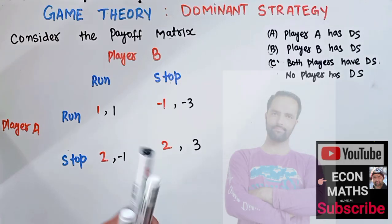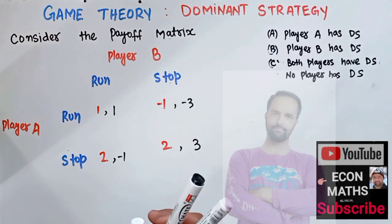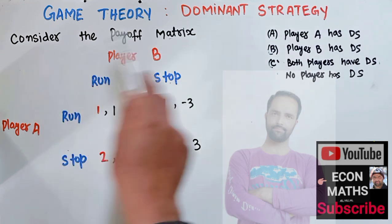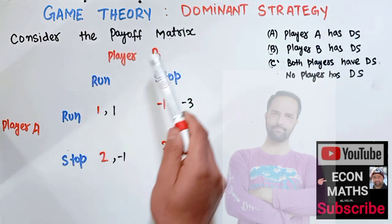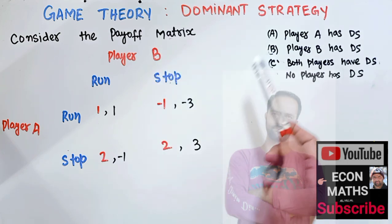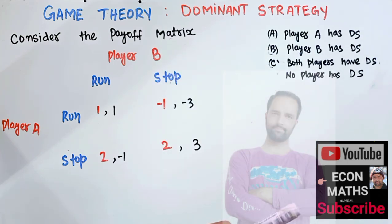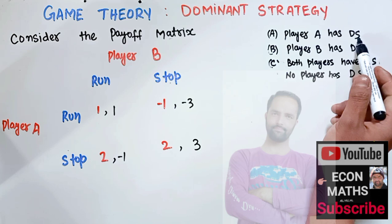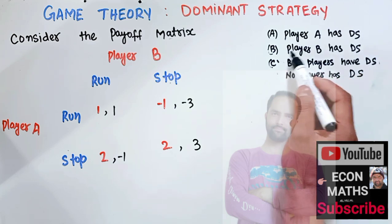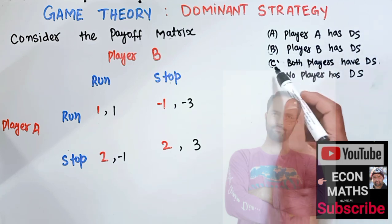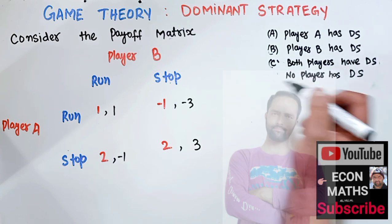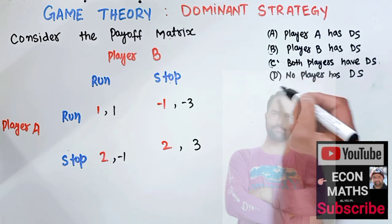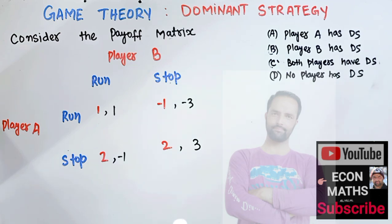In this video we will learn about the dominant strategy in game theory. The question gives us a payoff matrix for player A and player B, and asks which option is correct: player A has a dominant strategy, player B has a dominant strategy, both players have dominant strategies, or no player has a dominant strategy.